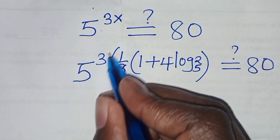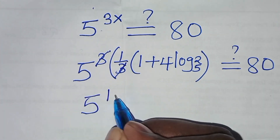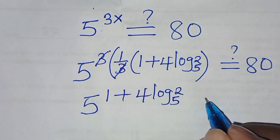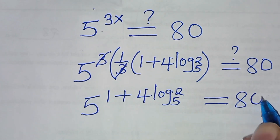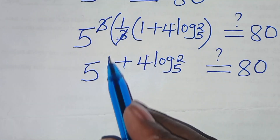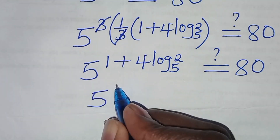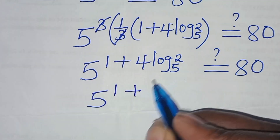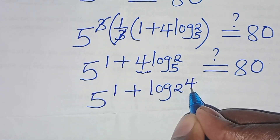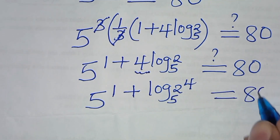So we have 5 to the power 1 plus 4 log 2 to base 5, which should give 80. Since 4 is a power, this can be expressed as 5 to the power 1 plus log of 2 to the power 4 to base 5, which should give 80.